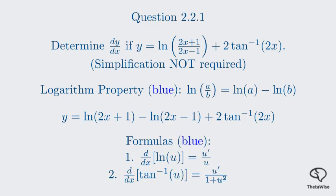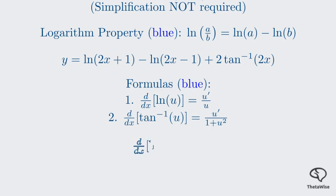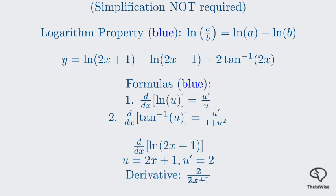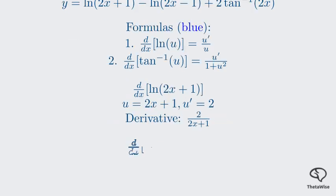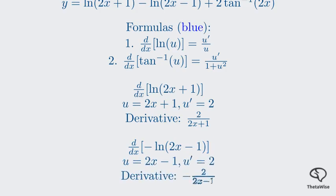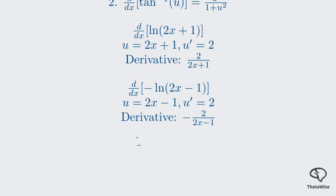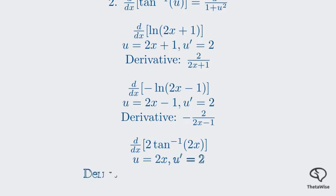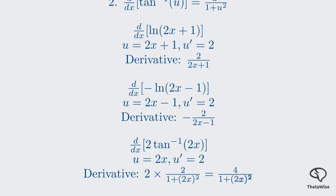Differentiating the first term, ln of 2x plus 1, where u equals 2x plus 1 and u prime equals 2, gives us 2 divided by 2x plus 1. For the second term, negative ln of 2x minus 1, similarly u prime is 2, giving negative 2 divided by 2x minus 1. For the third term, 2 times the inverse tangent of 2x, u equals 2x and u prime is 2, giving 2 times 2 over 1 plus 2x squared, which equals 4 divided by 1 plus 2x squared.